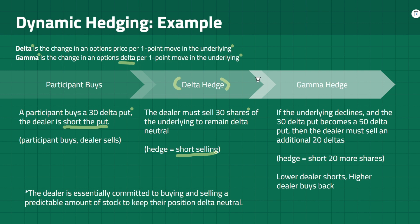Now, if the underlying declines and the 30 delta put becomes a 50 delta put, then the dealer must sell an additional 20 deltas — in other words, they have to short 20 more shares. So the lower the underlying, the dealer shorts; the higher the underlying, the dealer buys. This is known as the gamma hedge. Essentially, the dealer is committed to buying and selling a predictable amount of stock to keep their position delta neutral.